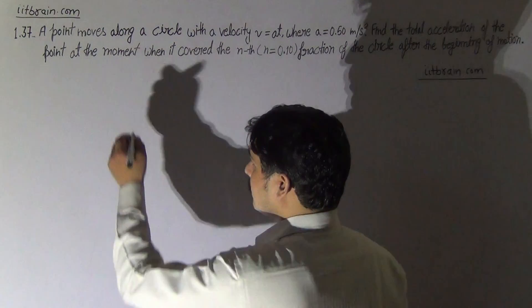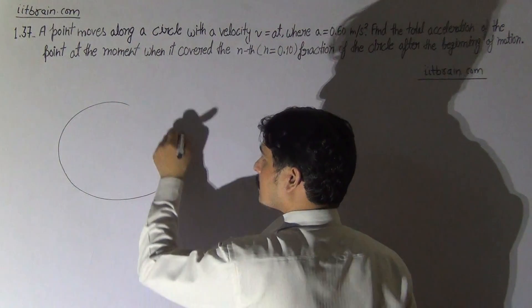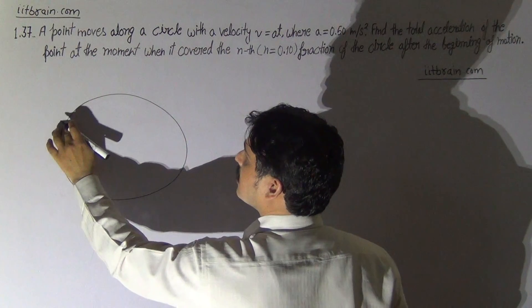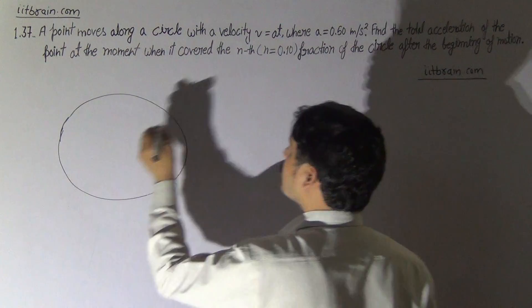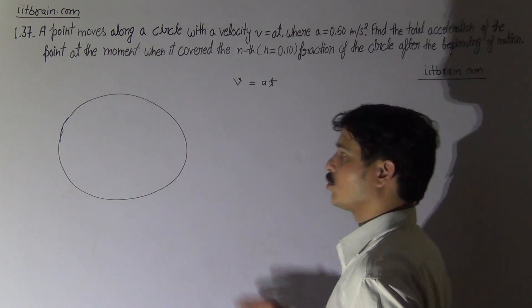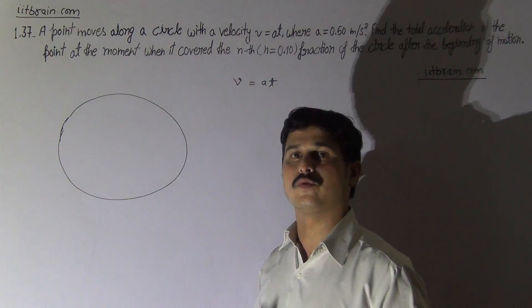The problem is a particle is moving in a circle and since its velocity is given as V equal to at, since its velocity depends on time, it is an example of non-uniform circular motion.